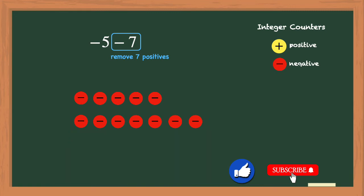After they are gone, you just count the number of counters left on the screen, and you see 12 negative counters. So the answer is negative 12.